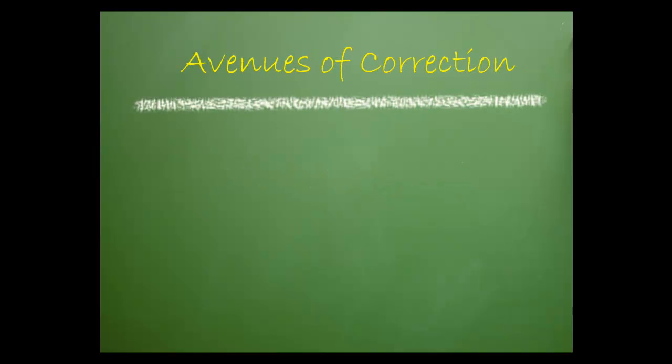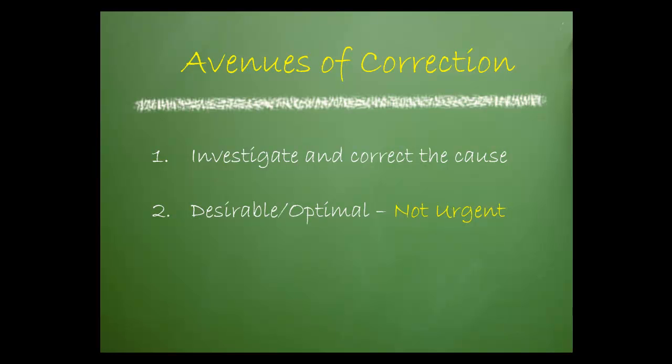When random error exceeds random allowable error, the following should be considered. If the performance goal used was optimum or desirable, then action should be taken to determine and correct the possible cause. The urgency is not great. If the performance goal used was minimum, then immediate action should be taken to determine and correct the cause.